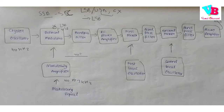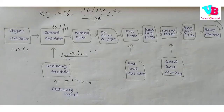The frequency spectrum shows 100 kHz at the center. The LSB spans from 100 kHz minus 3 kHz up to 100 kHz minus 100 Hz. The USB spans from 100 kHz plus 100 Hz to 100 kHz plus 3 kHz. A Bandpass Filter then selects either LSB or USB for transmission. For instance, if USB is selected, we transmit 100.1 kHz to 103 kHz.